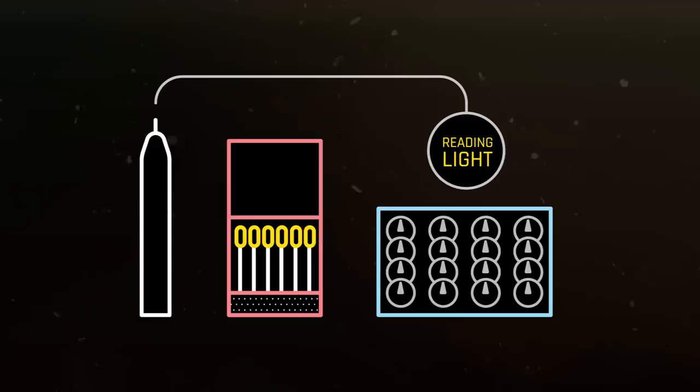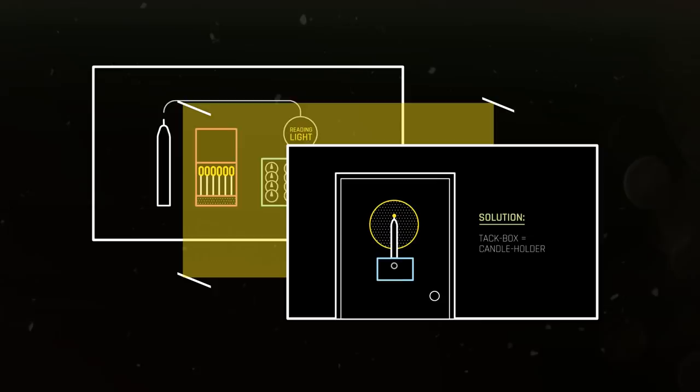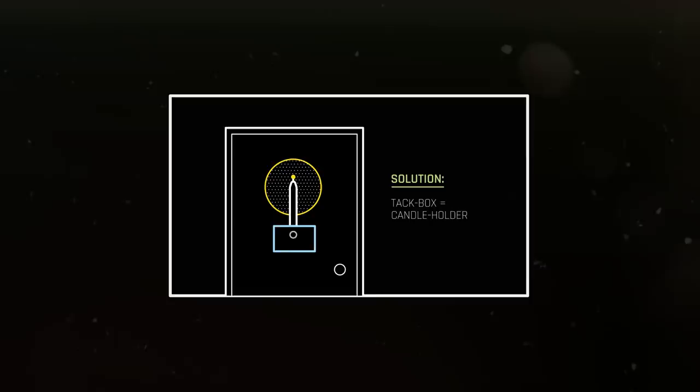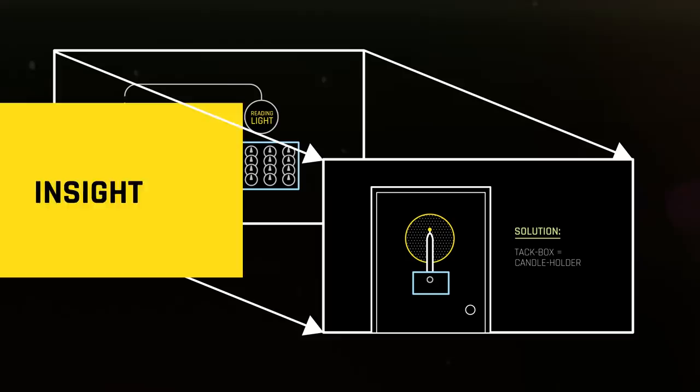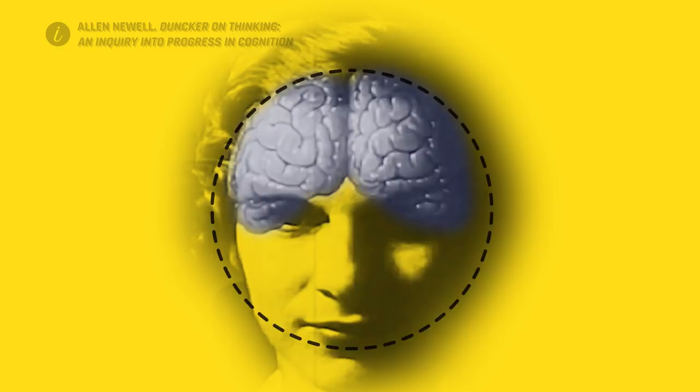The solution is to empty the tack box, use the thumbtacks to nail the box to the door, and use it to hold the candle. That moment when the person stops seeing the tack box as just a holder for the tacks is what Wallace called insight. He assumed that the shift is a lot like a leap. Take that leap, solve the problem. However, when Duncker made people think out loud, he saw the structure of thought.